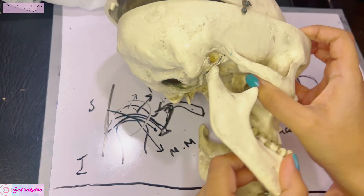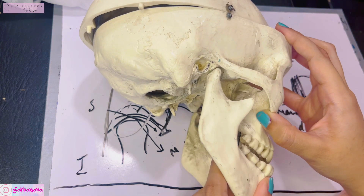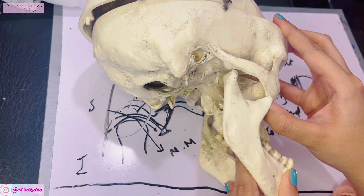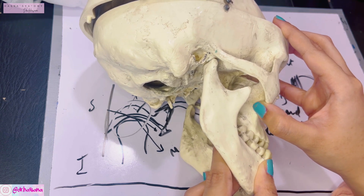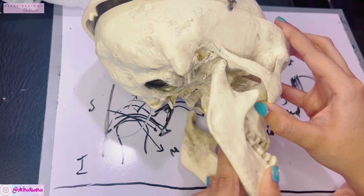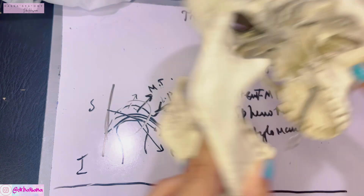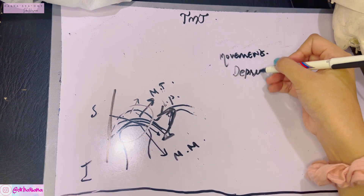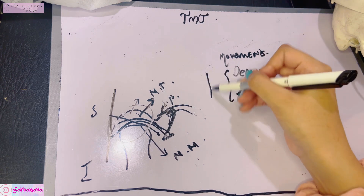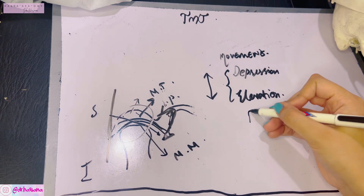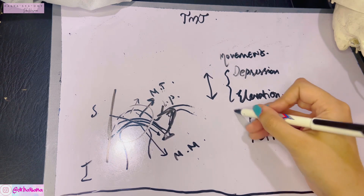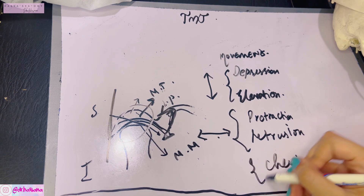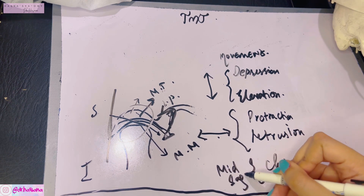The TMJ can perform five movements: depression (mouth opens), elevation (mouth closes), protrusion (mandible pulled forward), retrusion (mandible brought back), and side-to-side chewing or grinding movements. Depression and elevation occur around a vertical axis; protraction and retraction around a horizontal axis; and chewing movements around an imaginary mid-sagittal axis.